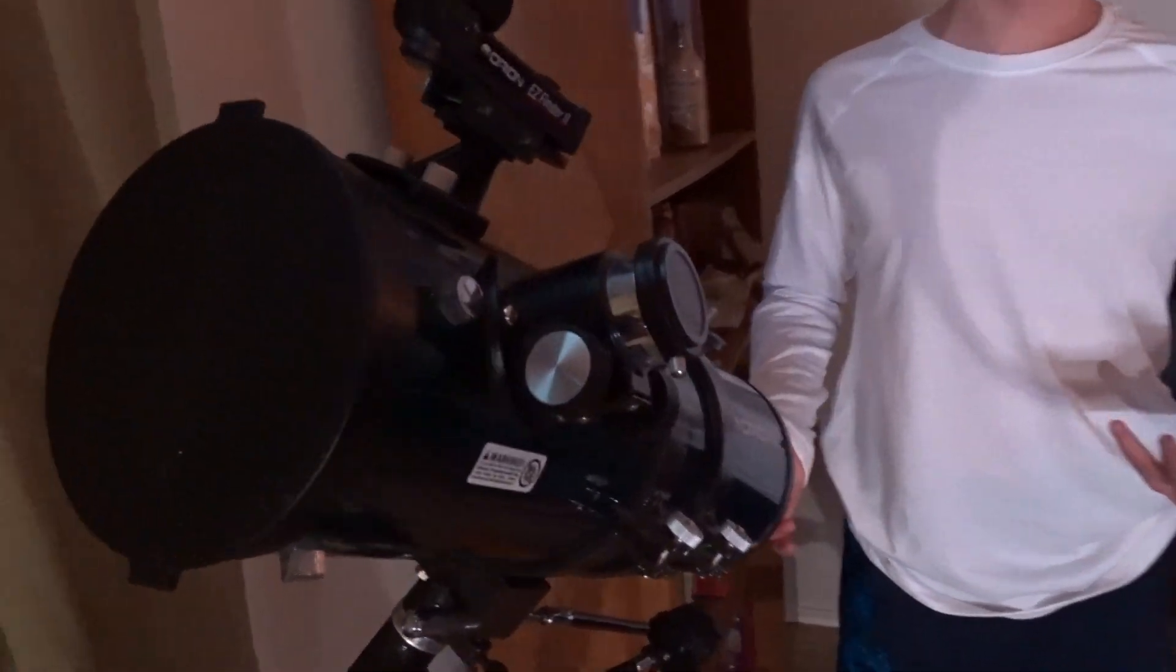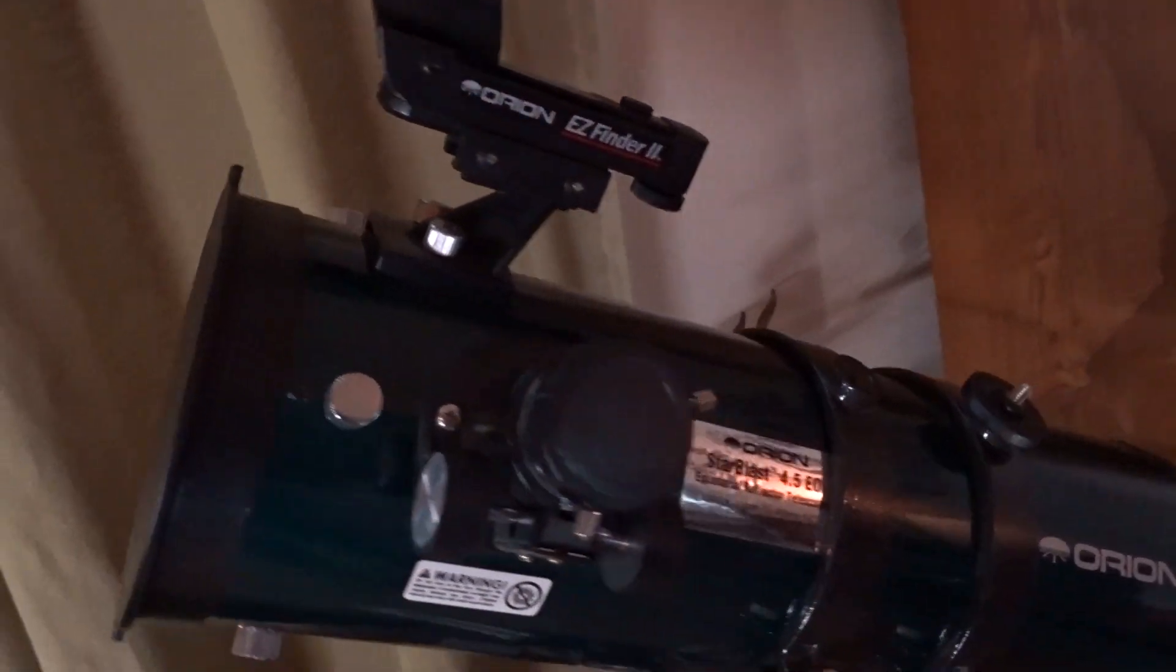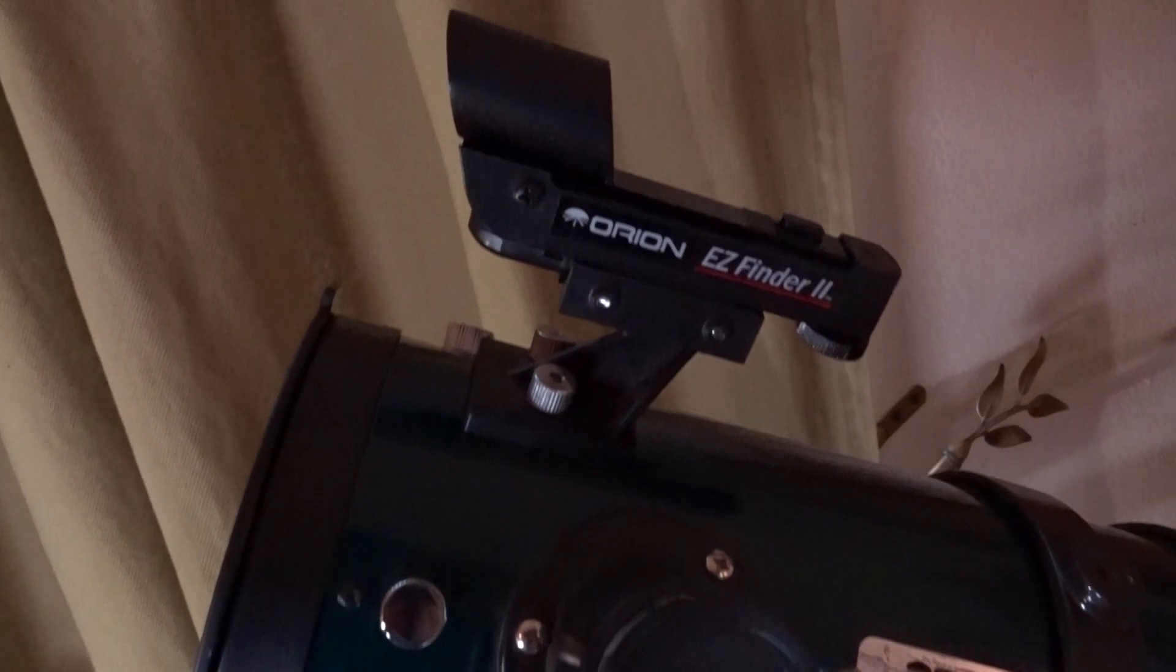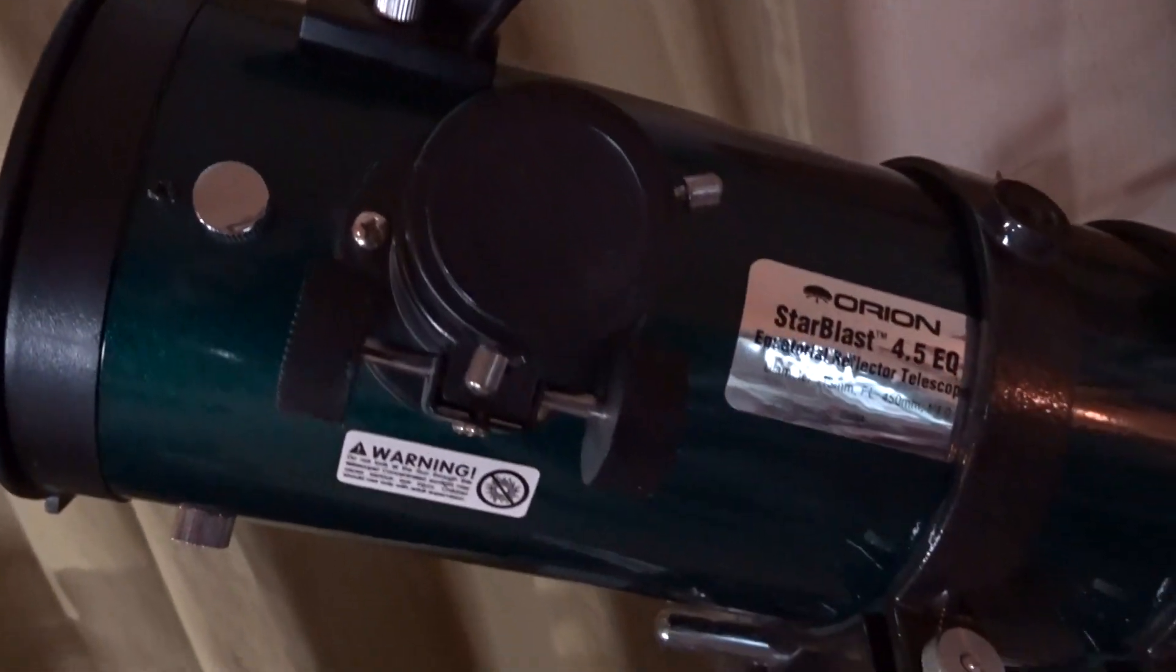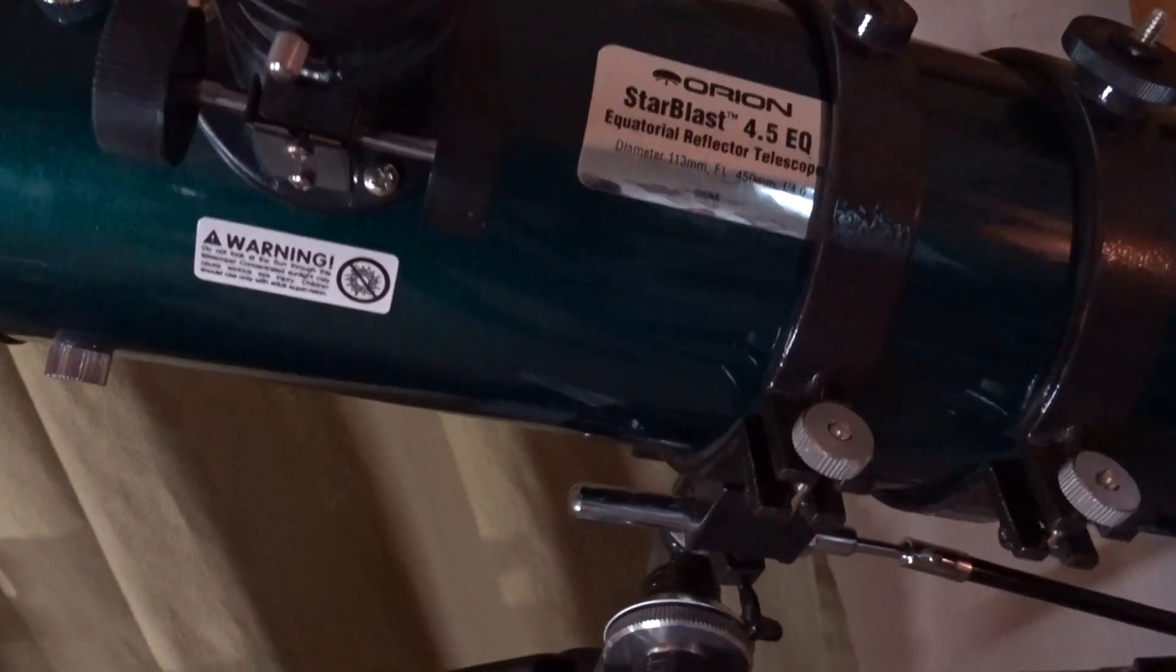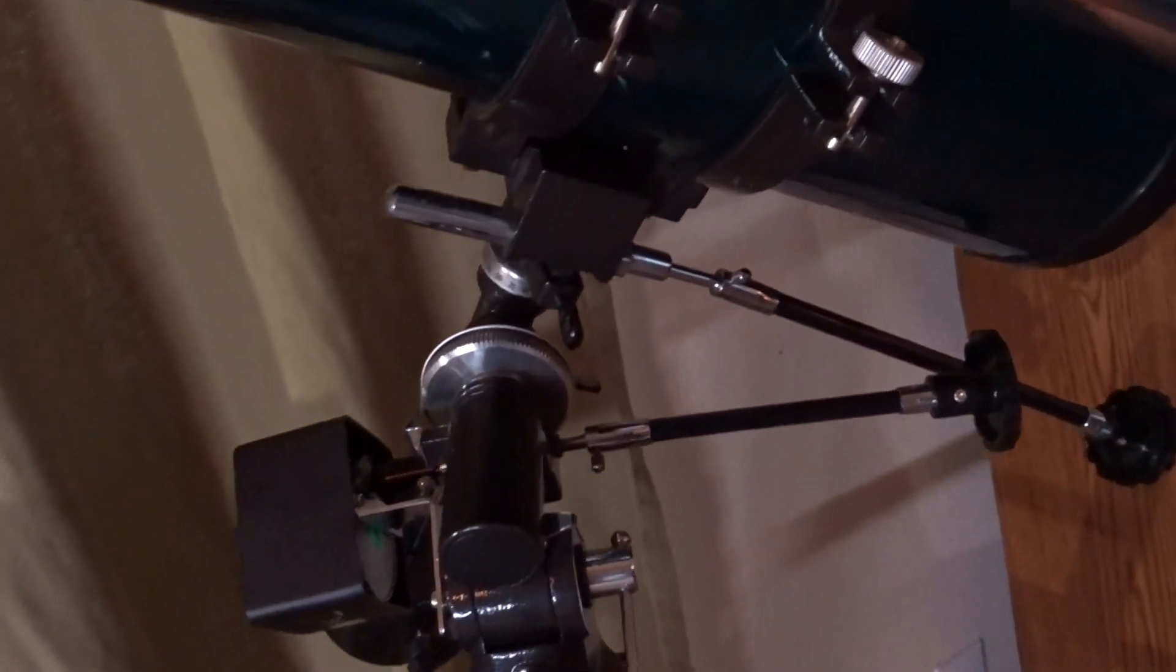However, it really depends on what you're viewing because there are also telescopes called refractors and catadioptrics. Catadioptrics are a combination of reflectors and refractors. They use tubes, but they also use the mirrors of reflectors. So where refractors are really good is if you have a fast focal ratio refractor, those are really good for viewing planets. You get really sharp images.